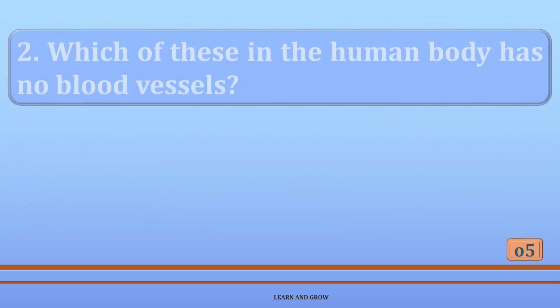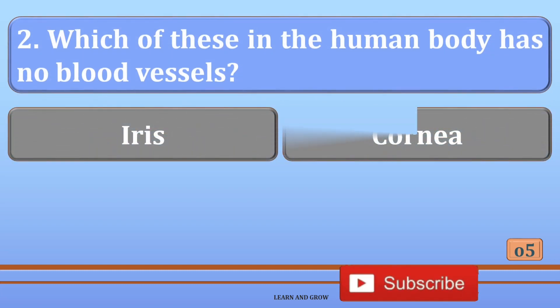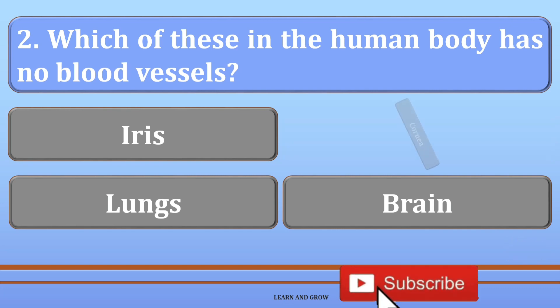Which of these in the human body has no blood vessels? Options are: A: iris, B: cornea, C: lungs, or D: brain. The right answer is cornea.